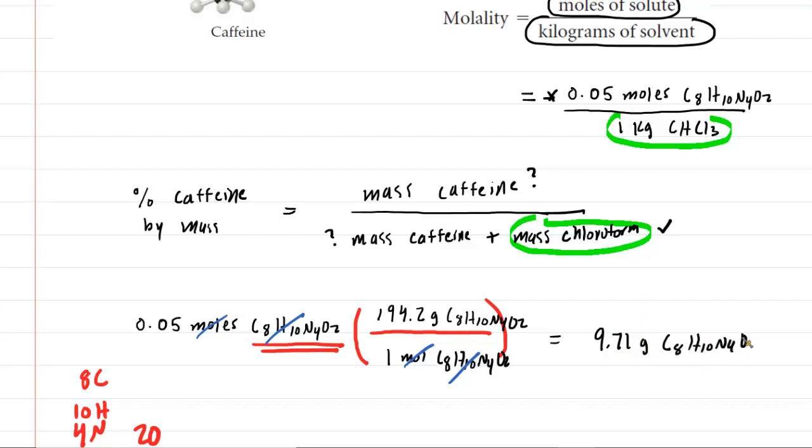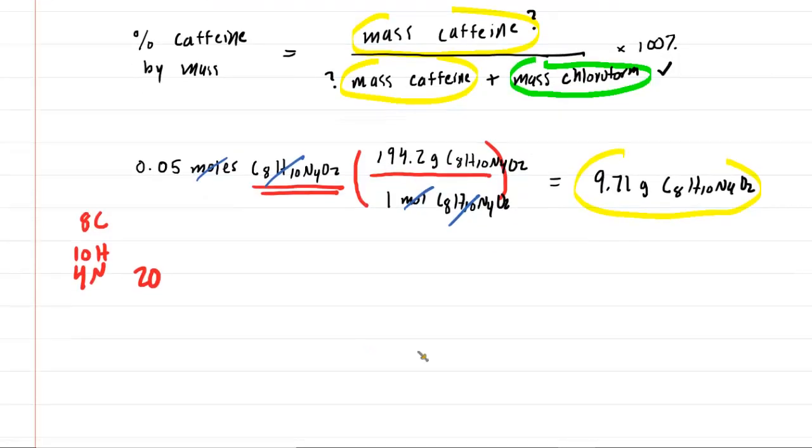So now that we have the grams of caffeine, we can take that value and plug it in here for the mass of caffeine as well as there for the mass of caffeine. And this is going to help us get the percent by mass. By the way, when you do the percent by mass, we also have to multiply by 100% to get it into percentage form. So here we go.